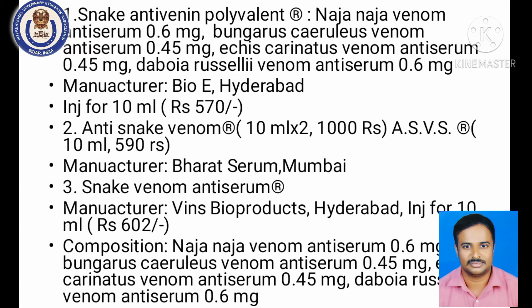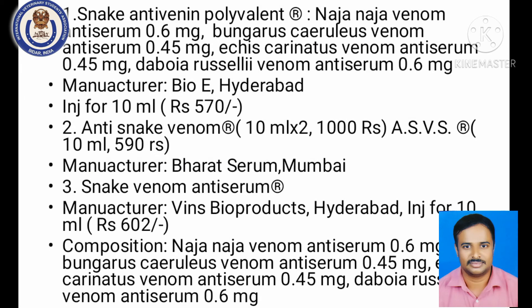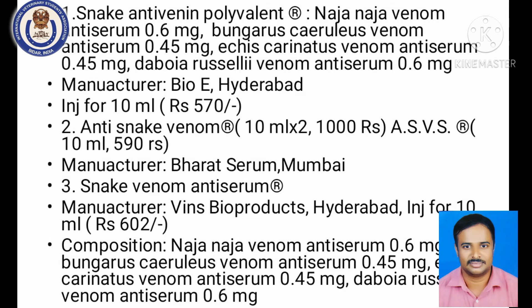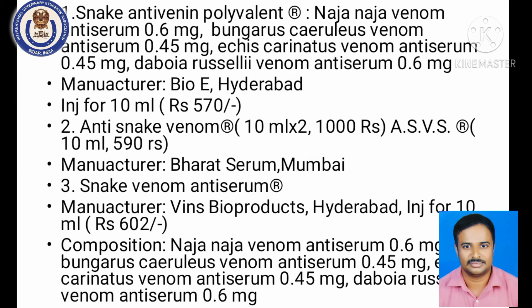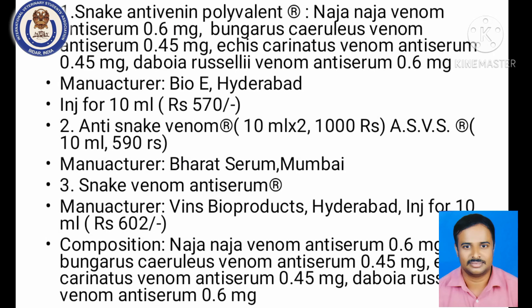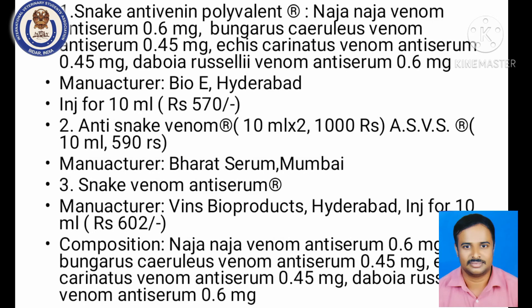The anti-venom supplied is most commonly polyvalent, combining anti-venom against Naja naja (cobra), Bungarus caeruleus (krait), Echis carinatus, and others. Biological E Limited, Hyderabad, supplies it as a 10 ml injection at approximately 572–600 rupees. Bharat Serum Institute also manufactures anti-snake venom serum, presented as a 10 ml injection at approximately 600 rupees.